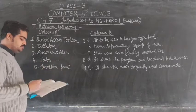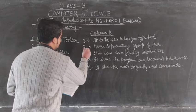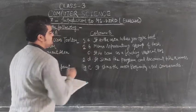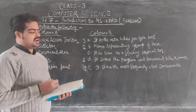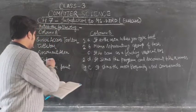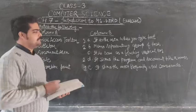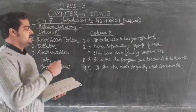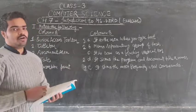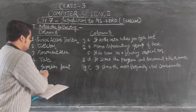The fourth one is tabs, and it will match with option B. Tabs represent a menu representing the group of tasks. The fifth one is insertion point.